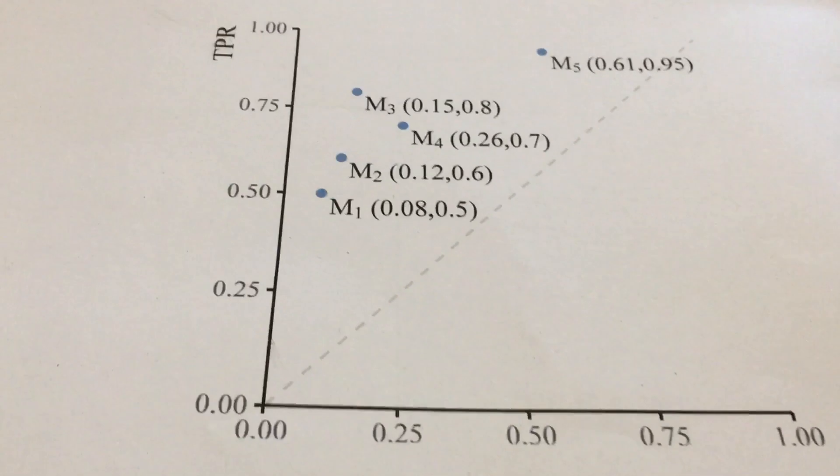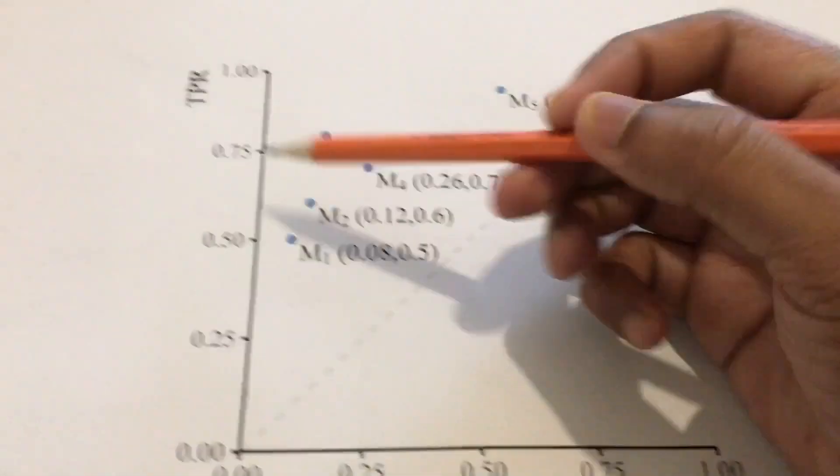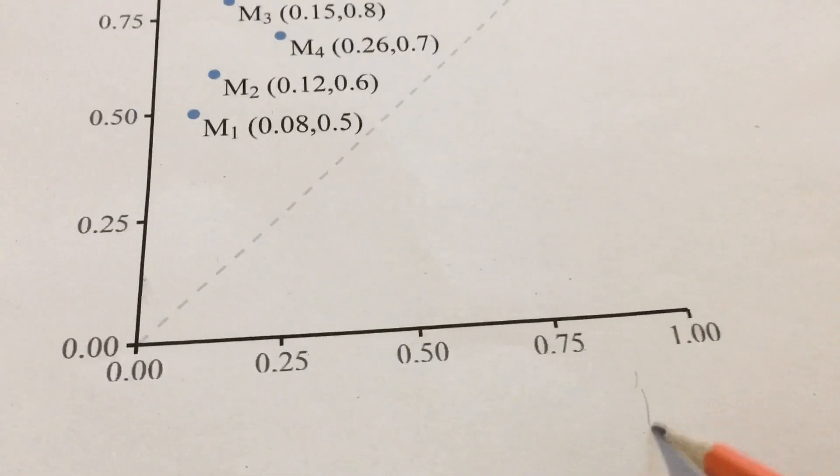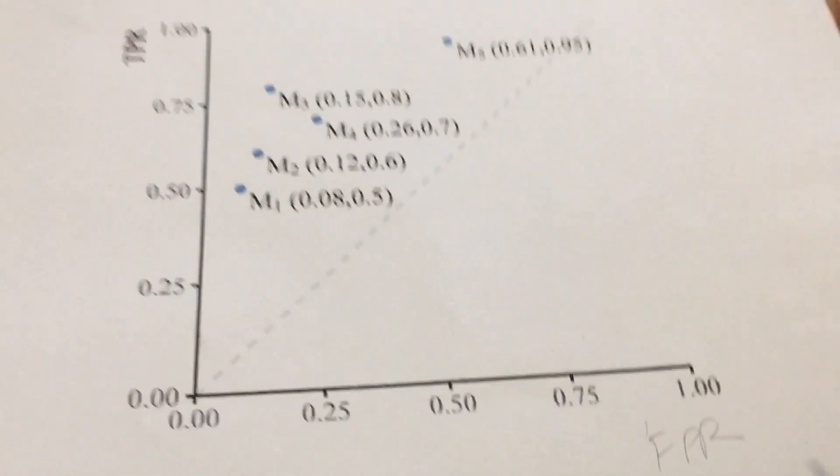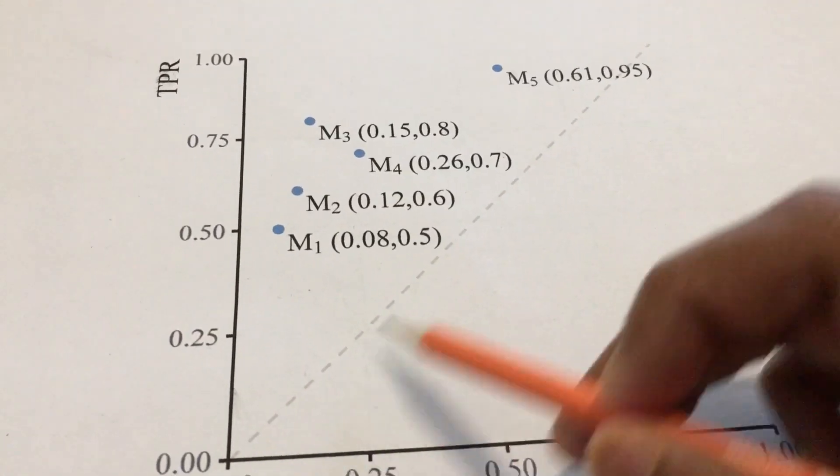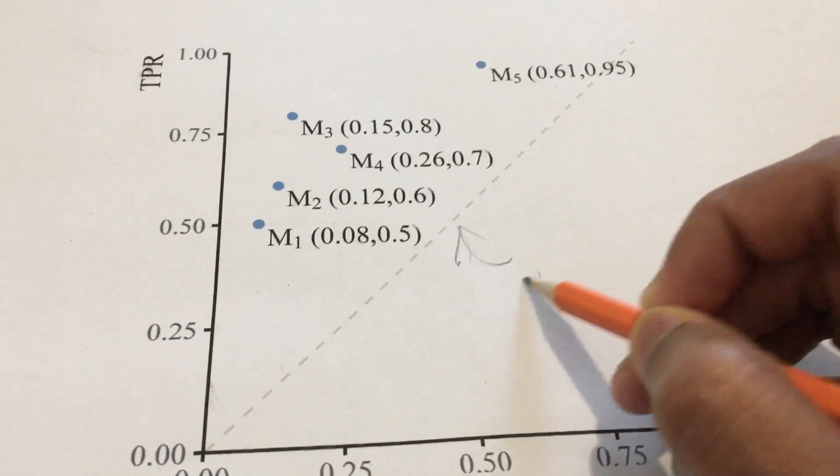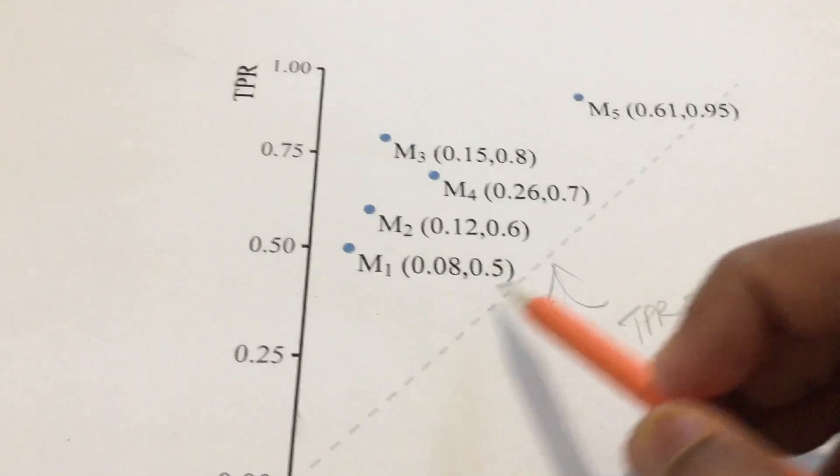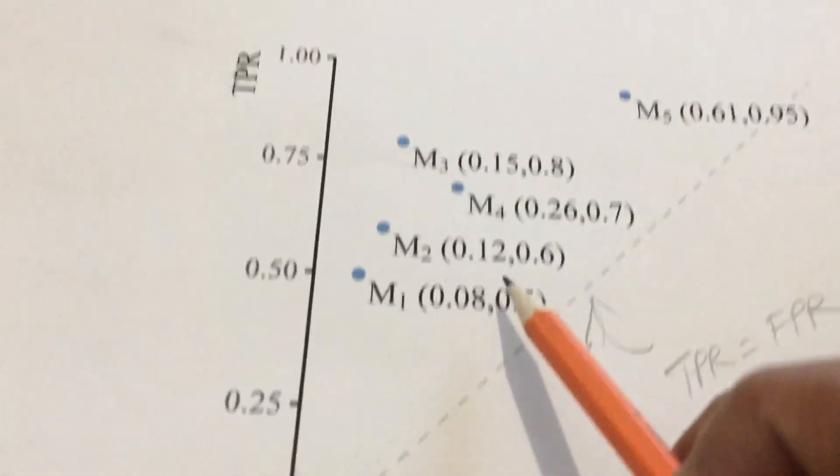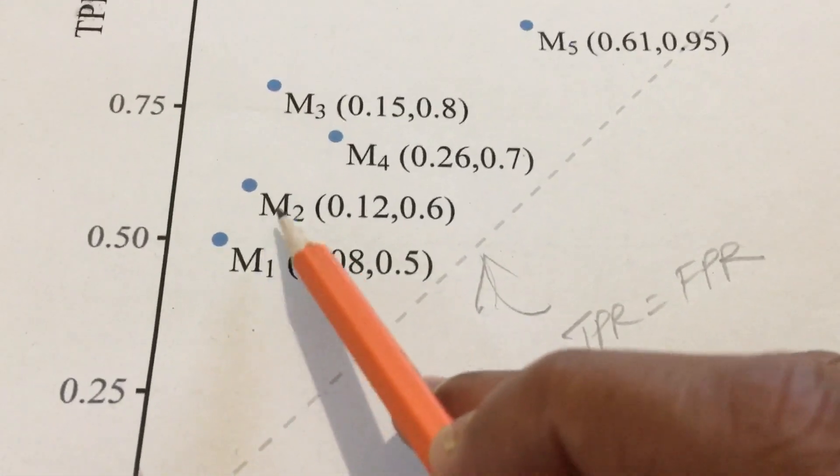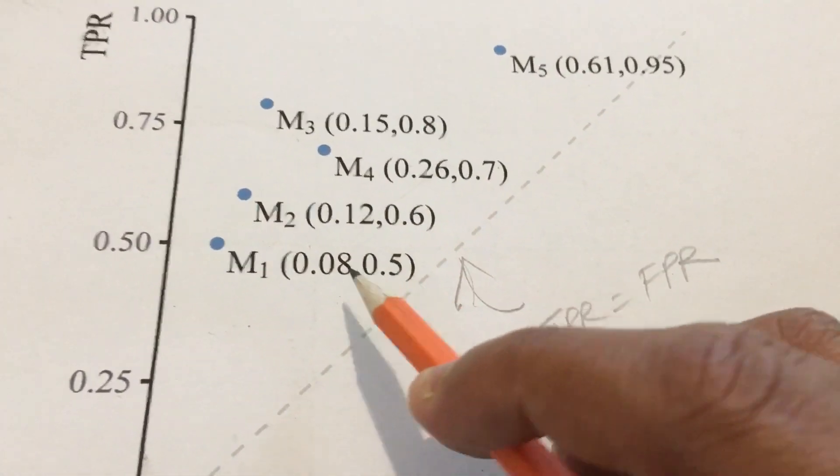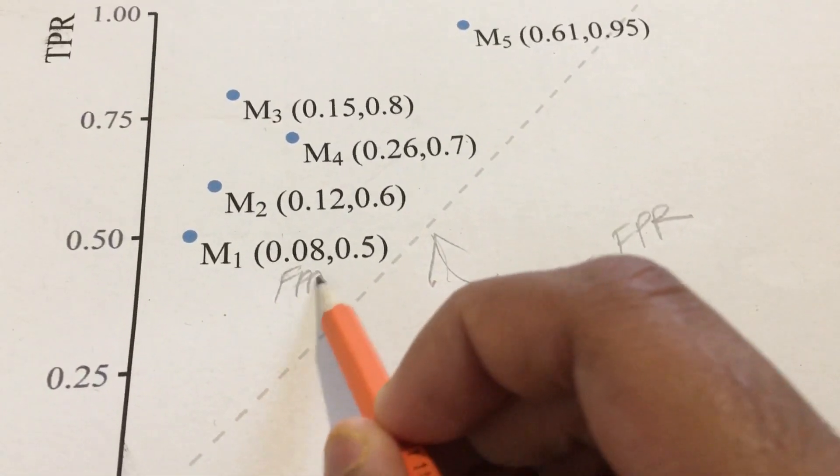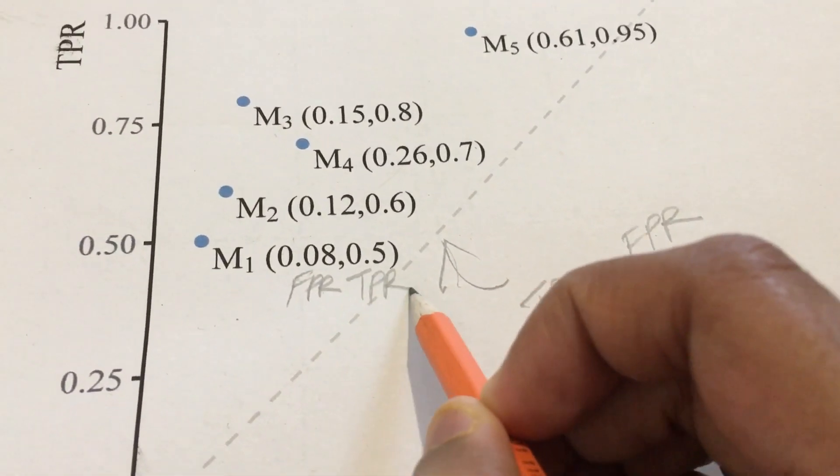This diagram looks like this: on the y-axis you have the TPR and on the x-axis you have the FPR. You have one line where TPR equals FPR, and you have all these models. These are the coordinates of the models for M1, M2, M3, M4, M5. This is the FPR axis and this is the TPR axis. You can consider all these points.